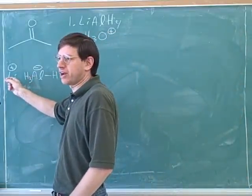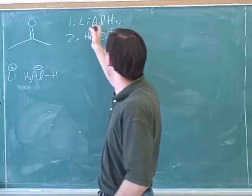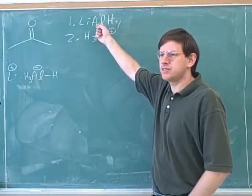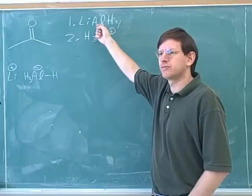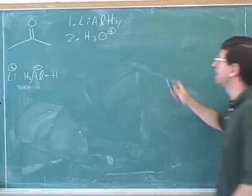The lithium here is just a counter ion. A neutral aluminum would only be bonded to three things. So an aluminum with a fourth thing has a negative charge. Do you remember what the name for this is in words? That would be lithium aluminum hydride.